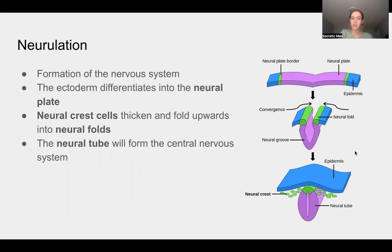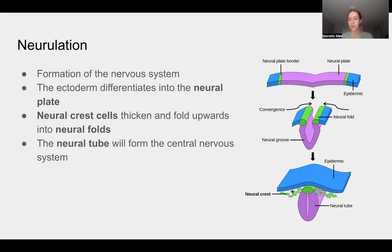Neurulation is the formation of the nervous system. As we said, the ectoderm forms the nervous system. The ectoderm differentiates into the neural plate, and then the neural crest cells at the neural plate border thicken and fold upwards, forming neural folds. The neural groove eventually becomes the neural tube — our central nervous system, the brain and spinal cord. The neural crest cells then break off and separate the epidermis from the neural tube.